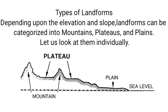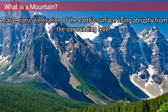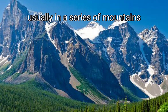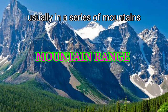The process takes a very long period of time — it takes millions of years to form landforms. The major types of landforms are categorized into mountains, plateaus, and plains. Let us look at them individually. First, we will start with the mountain. A large natural elevation of the earth's surface rising abruptly from the surrounding level is termed as mountain. Usually, mountains are present in a series of peaks, which is termed as a mountain range.